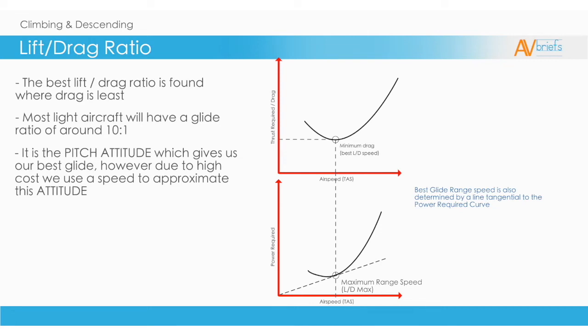At that point where it touches is the lift to drag maximum. Lift to drag maximum gives us both our minimum drag or best glide speed, and it also gives us the maximum range speed.